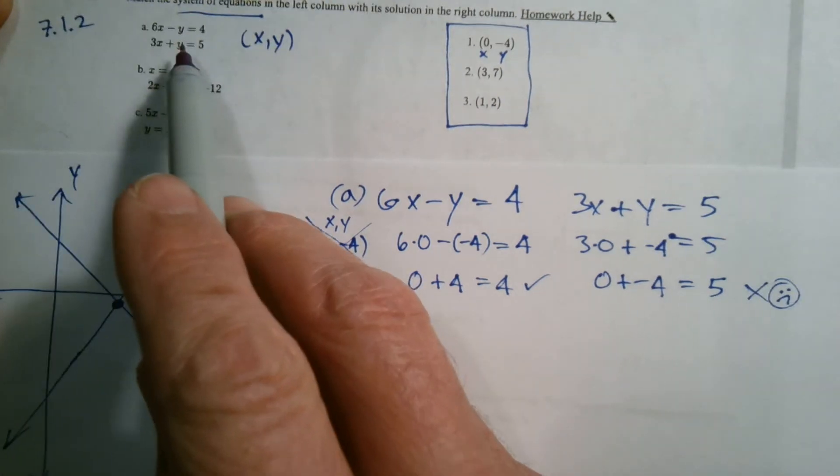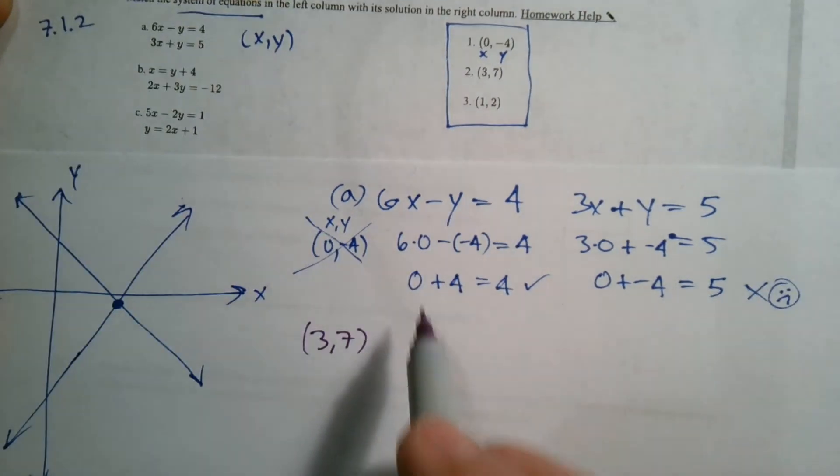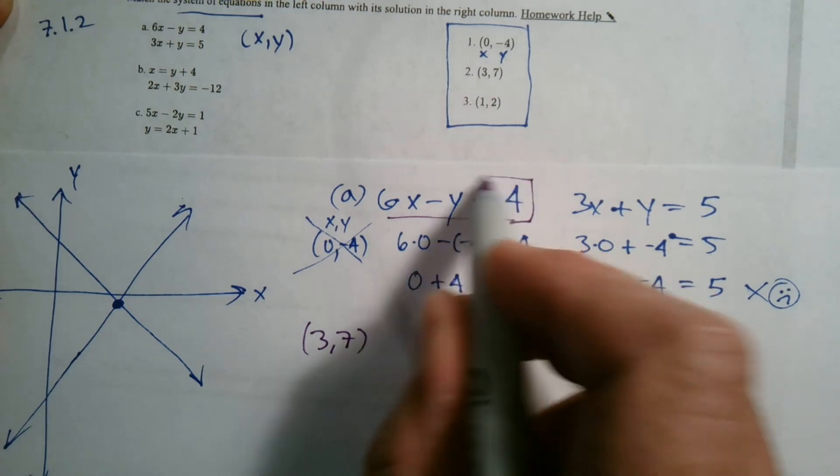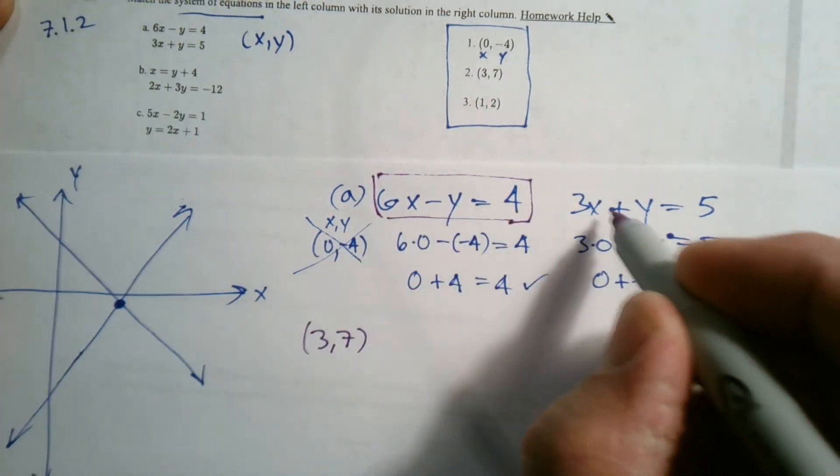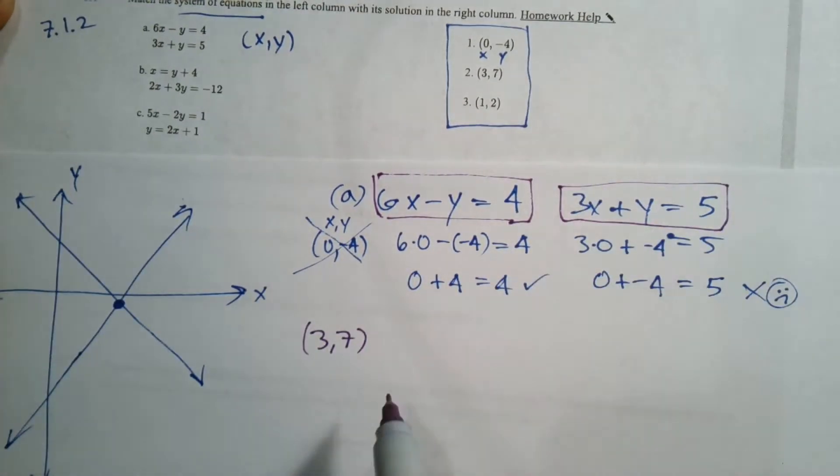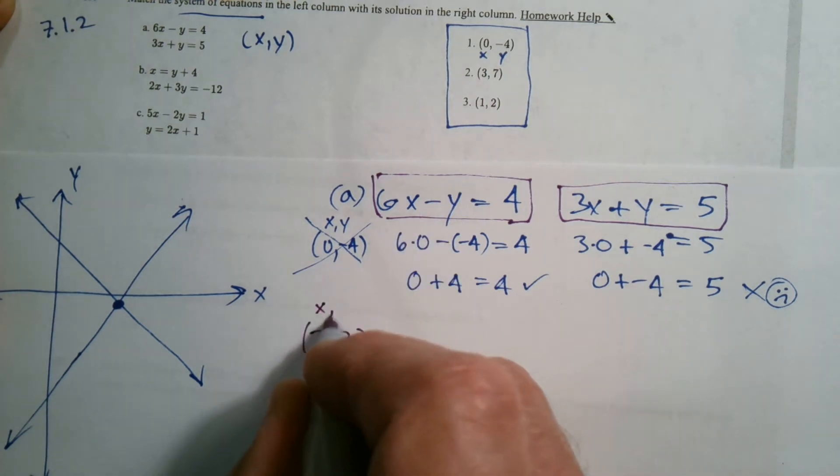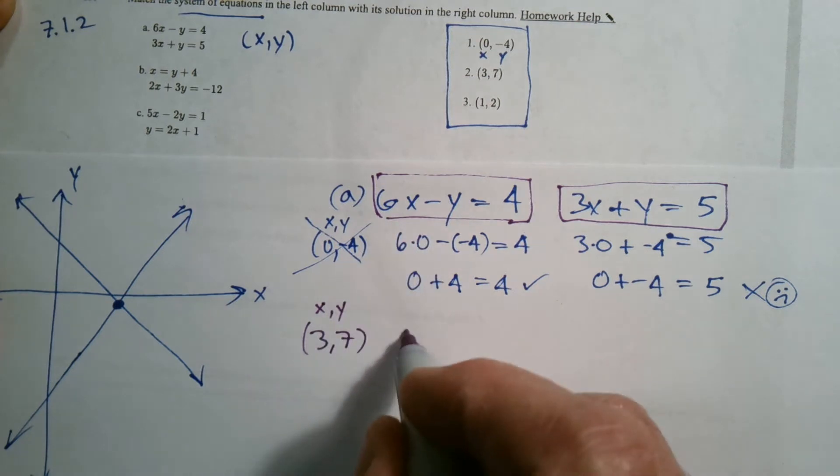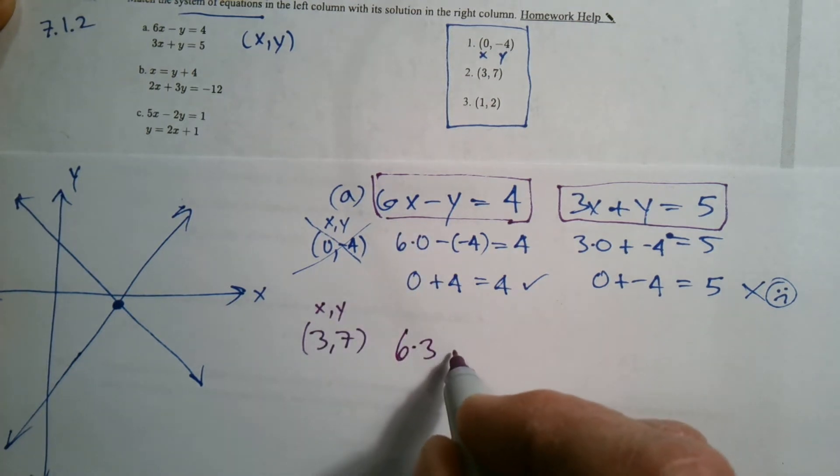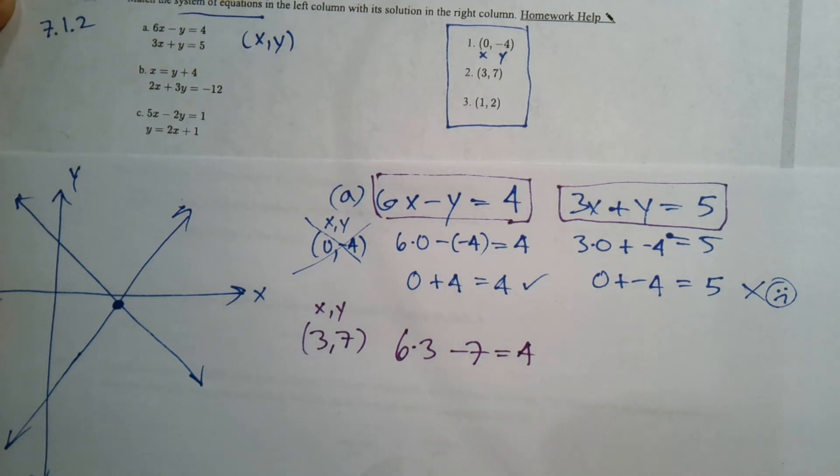So if I put in 3, 7 into each of these, will it work? So I'm still using the same equation. So there's my equations. So I'm going to plug them into the original two equations. So 3 now into x. Remember, this is x comma y. So 3 goes into the x. I'm going to say 6 times 3 minus 7. Does that equal 4?